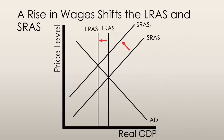Going back to the ADAS model, this is shown by a shift of the short-run aggregate supply curve and the long-run aggregate supply curve. We know that potential GDP has decreased due to a fall in the full employment quantity of labor. This is illustrated by a leftward shift of the long-run aggregate supply curve from LRAS to LRAS1. The money wage rate has also increased, and this is shown by a leftward shift of the short-run aggregate supply curve from SRAS to SRAS1.